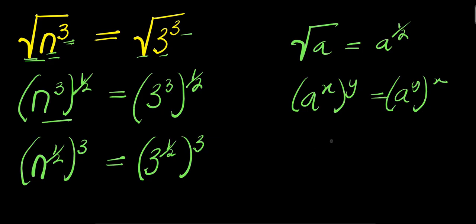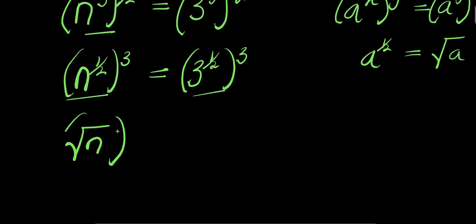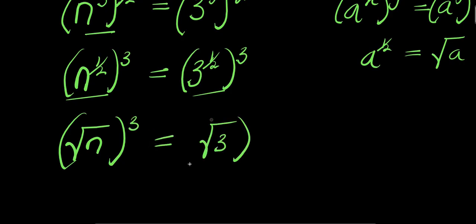Now if you have a to the power x raised to the power of y, this equals a to the power y raised to the power of x. Applying that here, n to the power 1 over 2 raised to the power of 3, equals 3 to the power 1 over 2 raised to the power of 3. Remember, a to the power 1 over 2 equals square root of a. So applying that here, square root of n raised to the power of 3 equals square root of 3 raised to the power of 3.